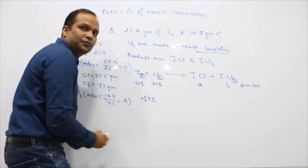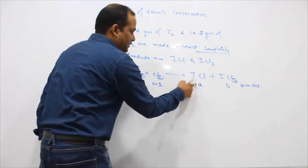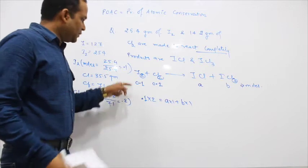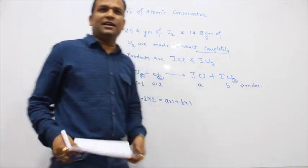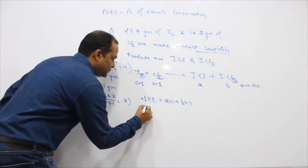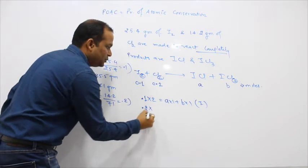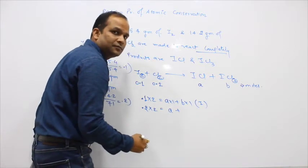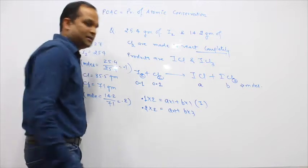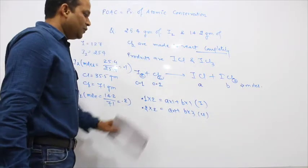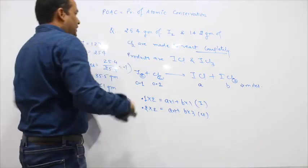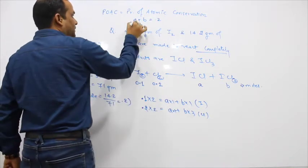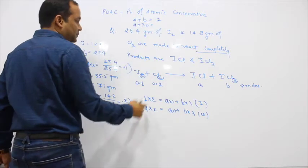Cancelling Nₐ throughout: 0.1 × 2 = A × 1 + B × 1, giving us A + B = 0.2. Likewise for chlorine: 0.2 × 2 = A × 1 + B × 3, giving us A + 3B = 0.4. So we get two equations: A + B = 0.2 and A + 3B = 0.4.